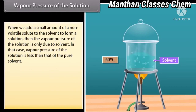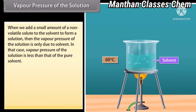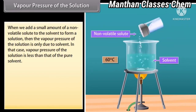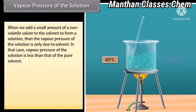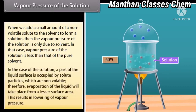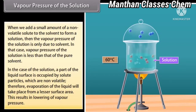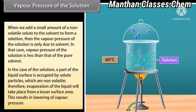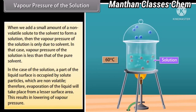Vapor pressure of the solution: When we add a small amount of non-volatile solute to the solvent to form a solution, then the vapor pressure of the solution is only due to the solvent. In that case, vapor pressure of the solution is less than that of the pure solvent. A part of the liquid surface is occupied by solute particles which are non-volatile, so evaporation takes place from a lesser surface area, resulting in lowering of vapor pressure.